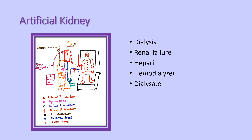The dialysate contains a low amount of sodium, potassium, and chloride, and a high amount of bicarbonate. It maintains the electrolyte concentration and also removes waste products like urea and creatinine.